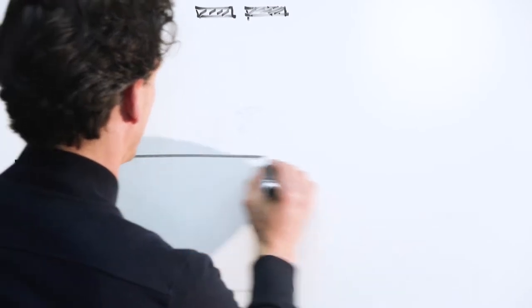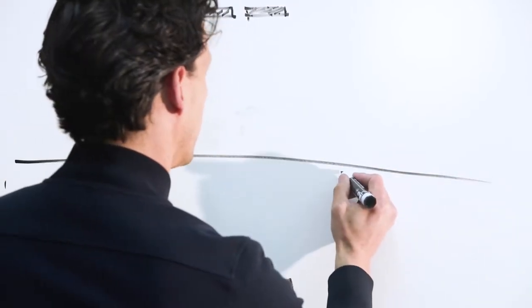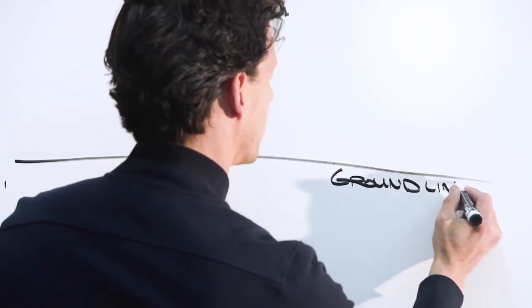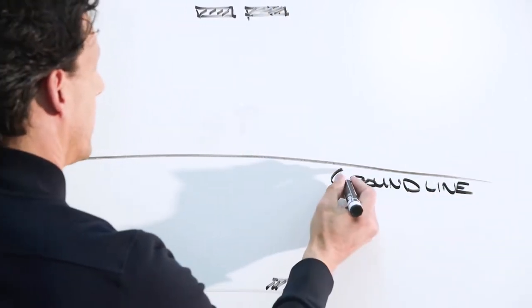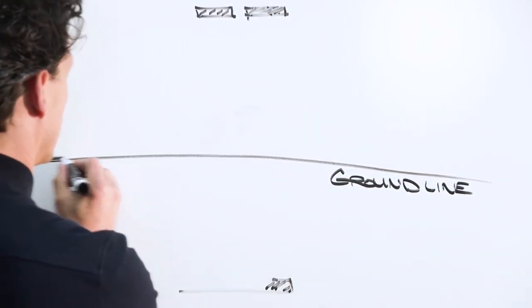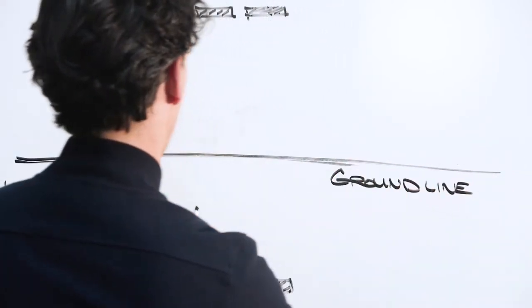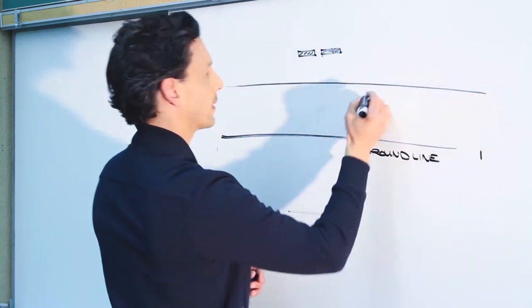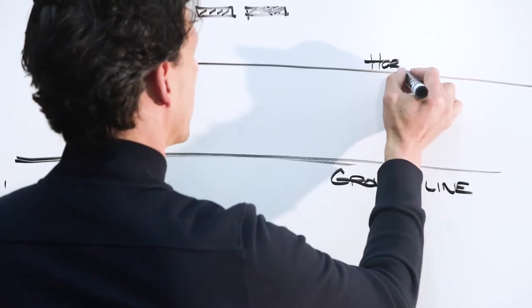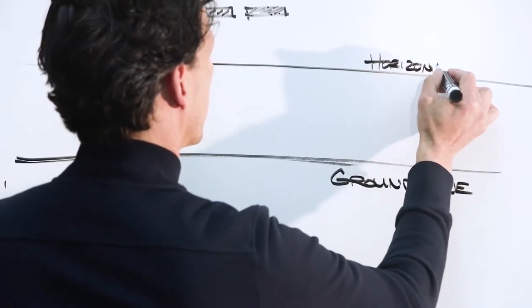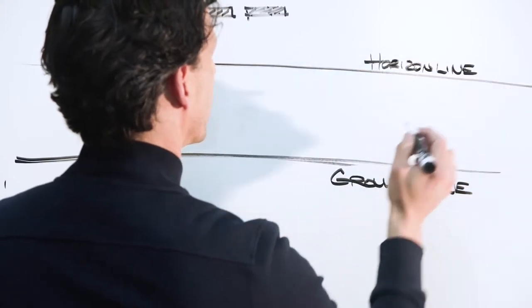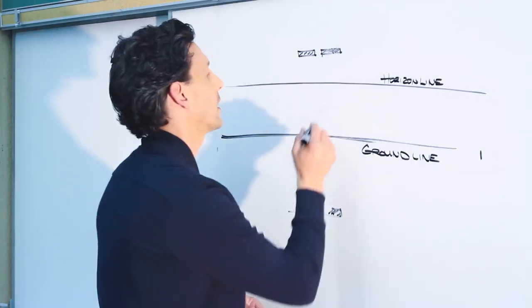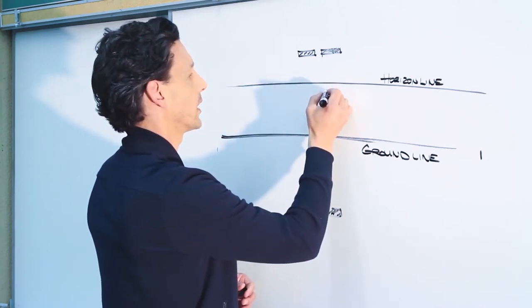Let's go ahead and place a ground line. Three things we talked about in perspective. One of them is a ground line. The other one is our horizon line. It is important. And of course, last but not least, our vanishing point, which we saw in our level one and level two.